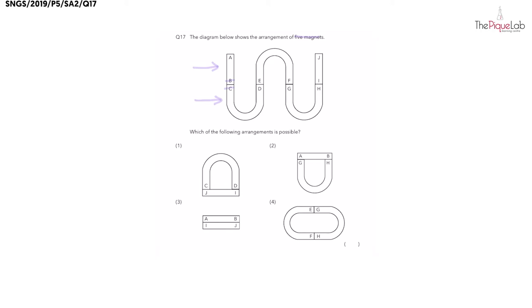like or unlike poles? Unlike poles, when facing each other, will cause the magnets to attract, so these two poles B and C must be unlike poles.